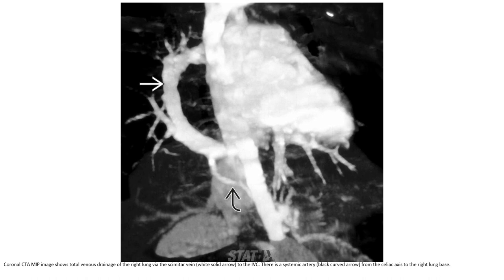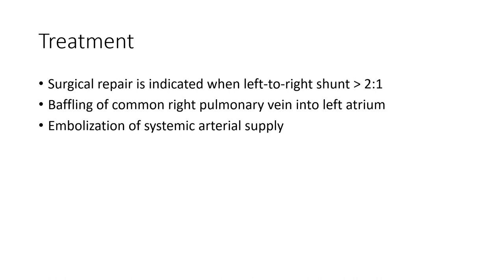As mentioned, there is a systemic artery from the celiac axis to the right lung base. Regarding treatment, surgical repair is indicated when the left-to-right ratio is more than 2 to 1, involving baffling of the common right pulmonary vein into the left atrium and embolization of the systemic arterial supply.